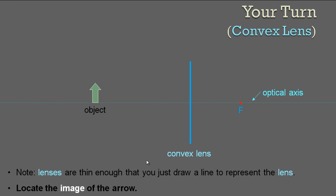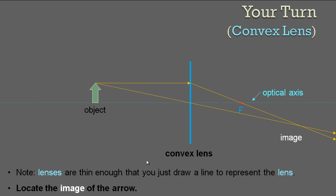Now it's your turn again — pause, grab a ruler, draw straight lines, draw the object. Welcome back. The first line hits the lens and goes through the focal point. The second line goes straight through. These rays do converge, so the image is formed on the other side — a real image. With a large convex lens you can actually project this image onto a piece of paper. Real images with lenses form on the opposite side of the lens from the object.